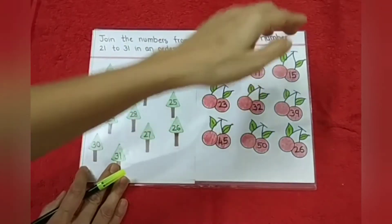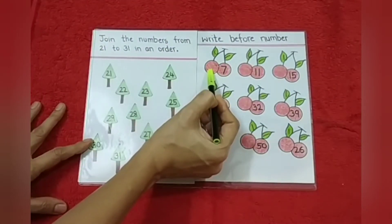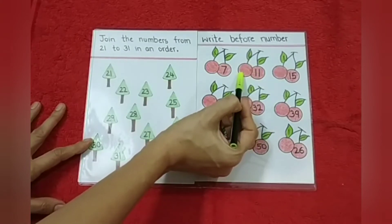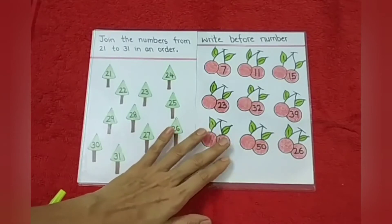And after that, write before numbers. So they have to write the previous number. Before 7, it will be 6. Before 11, it will be 10 and so on. That way they can solve this worksheet as well. Now, I have other worksheets also.